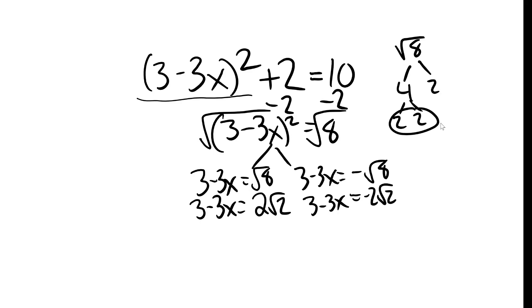Now I have to solve for x in each of these equations. Subtract 3 and divide by negative 3. And you get x equals 2 root 2 minus 3 over negative 3. Chilling. One answer down.